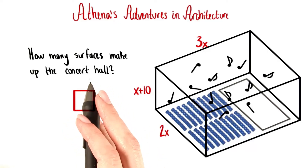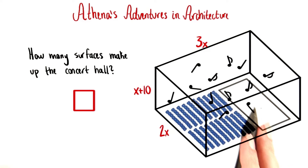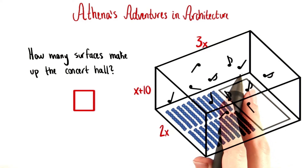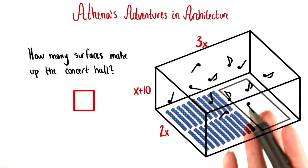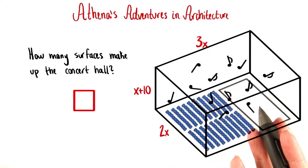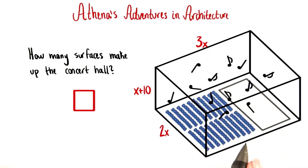Next, we're going to need to find the surface area of the hall. The surface area of an object is the sum of the areas of all of its surfaces. So, for this hall, how many sides do we have? Don't forget to count the ceiling and the floor.